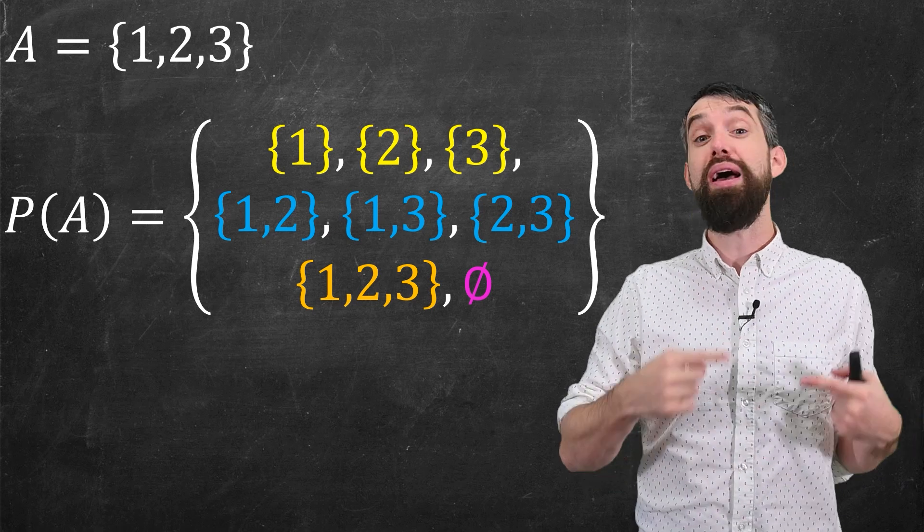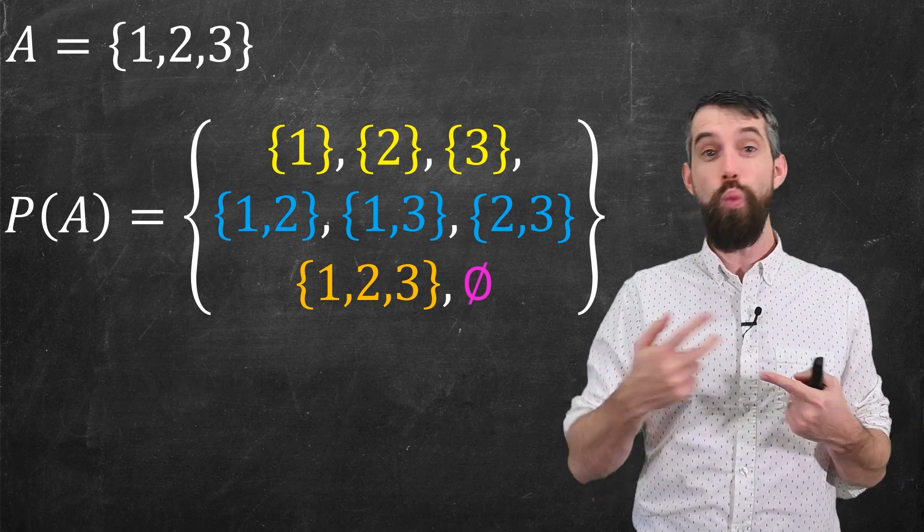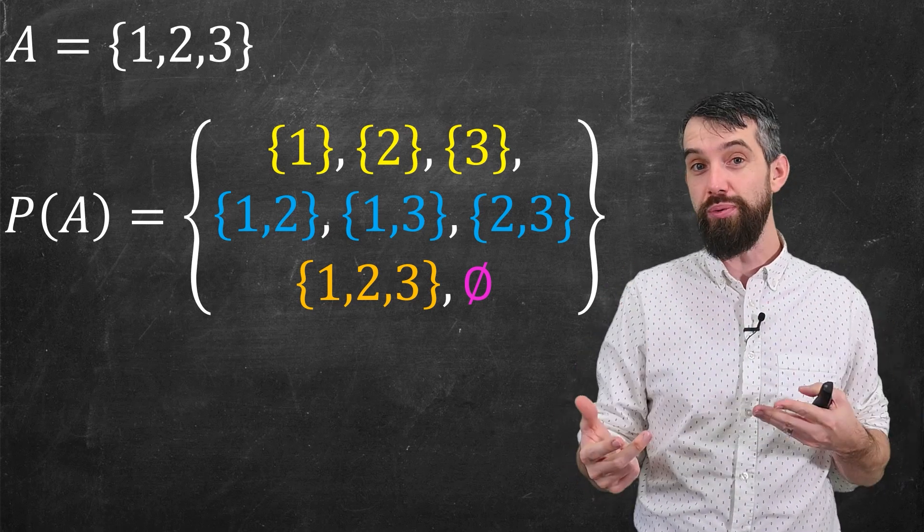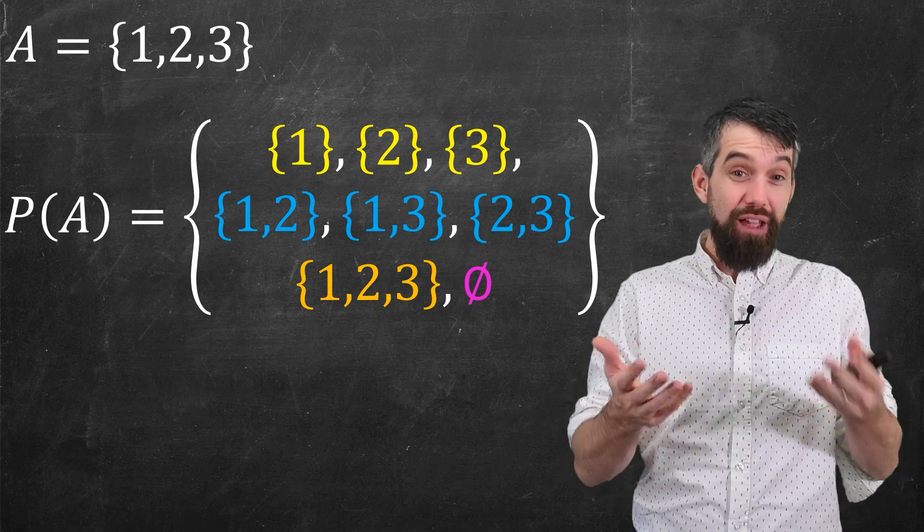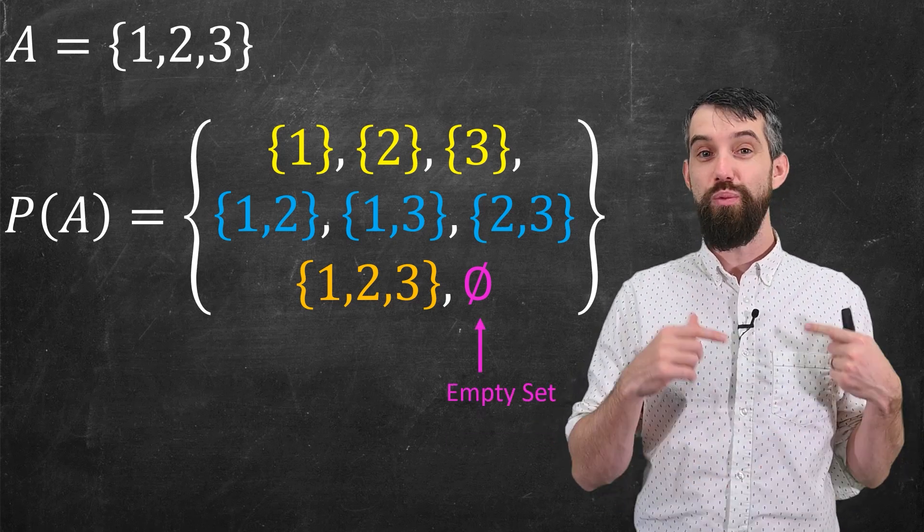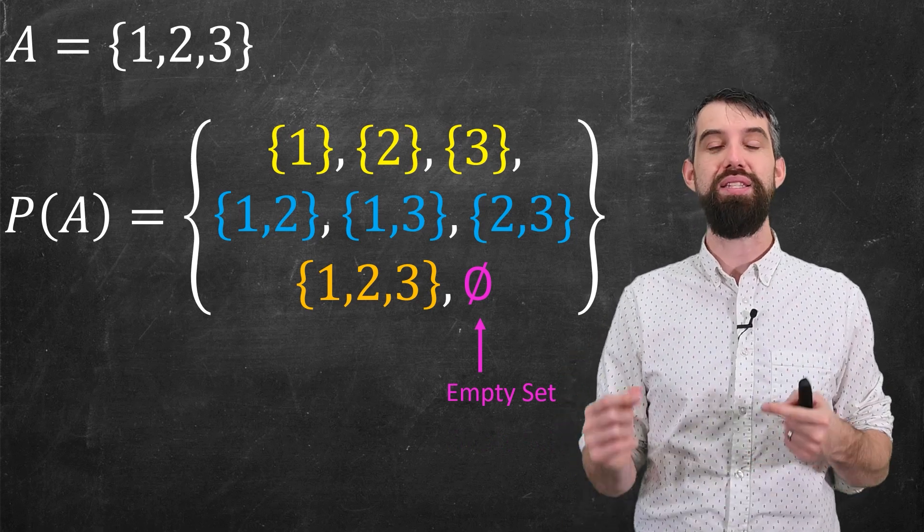I could have the various two element subsets, the sets containing {1, 2}, or {1, 3}, or {2, 3}. I could have the original {1, 2, 3}, and I could finally have the empty set, which we denote in this kind of funny way, this is the empty set.